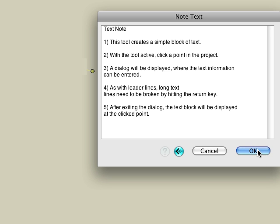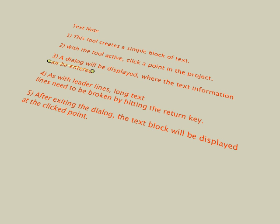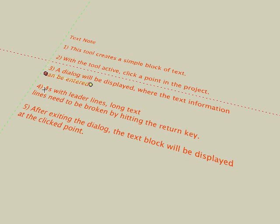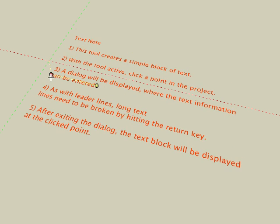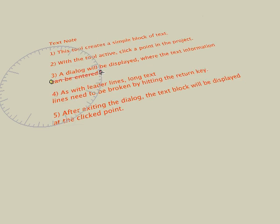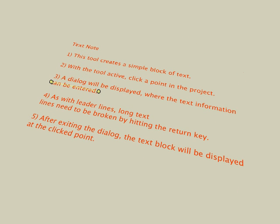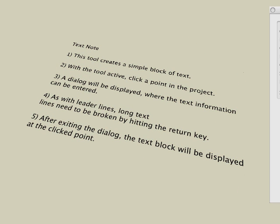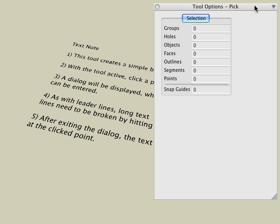Click the OK button and the text block will be displayed at the clicked point. It should be noted that just like other dimension objects, the orientation is dependent on the active plane when the note is created. Now that we have the basics of how to create dimension objects, let's look at how we can change the parameters in the Tool Options palette.